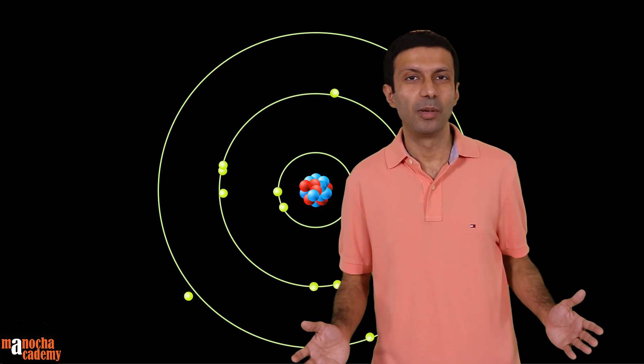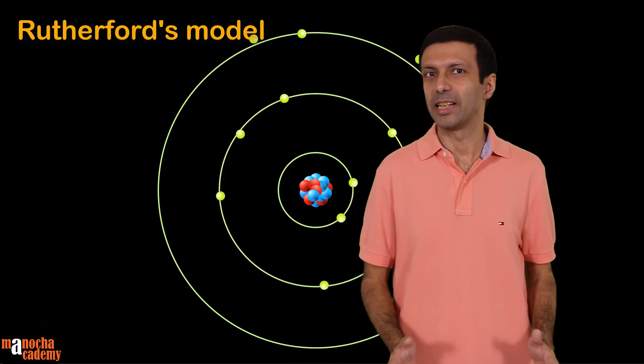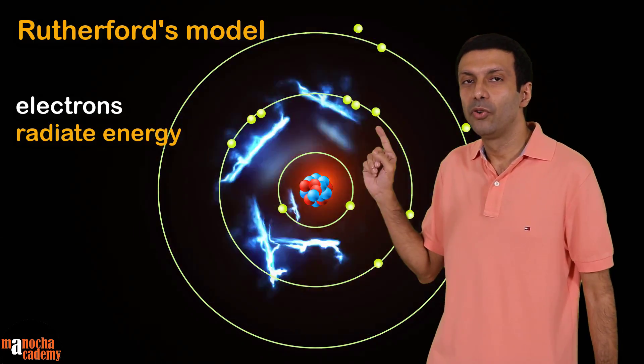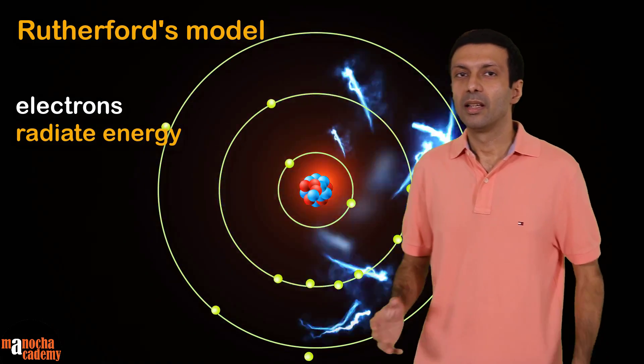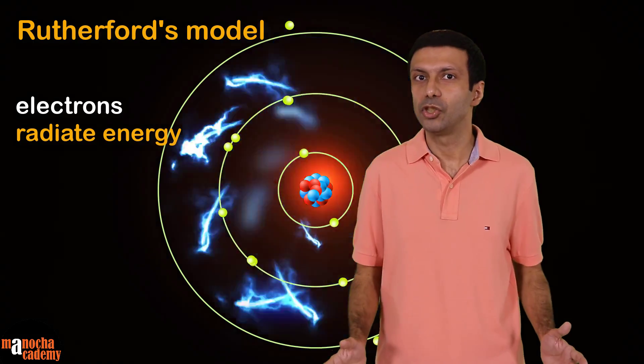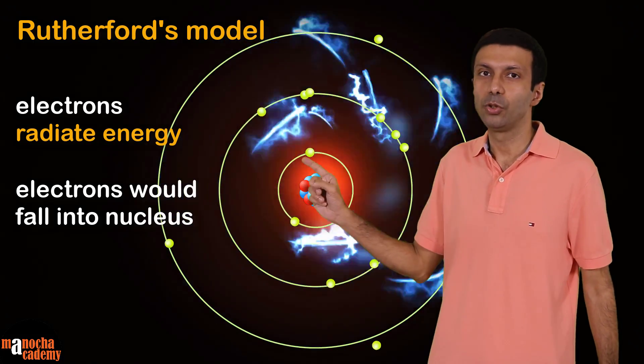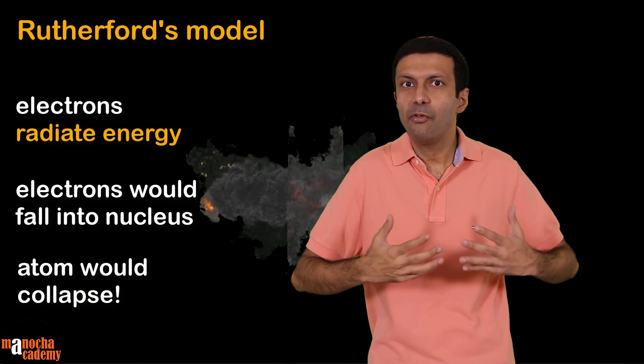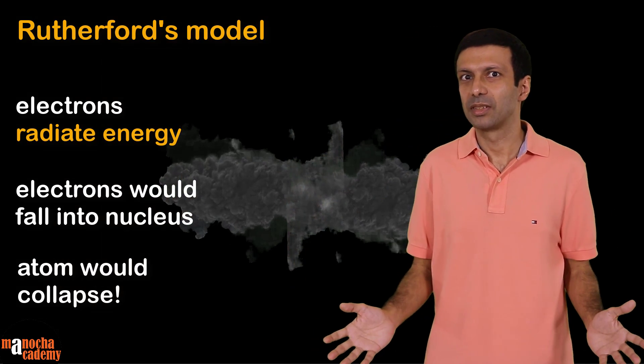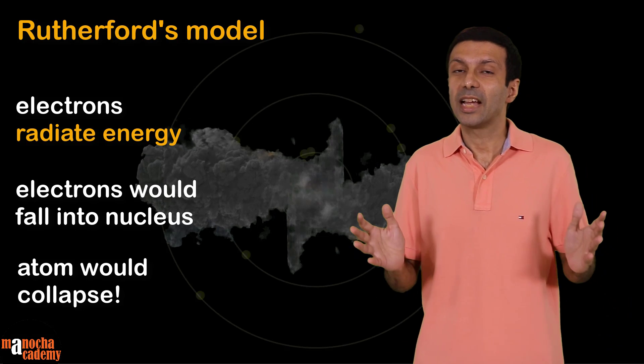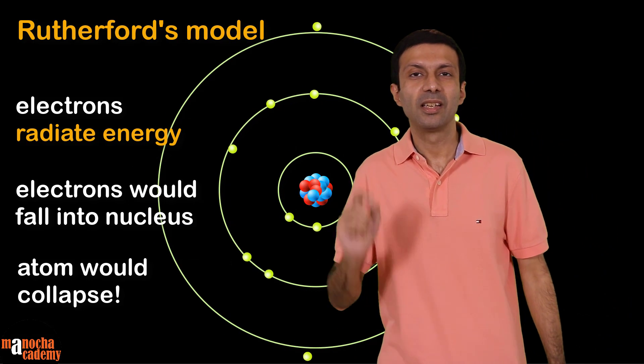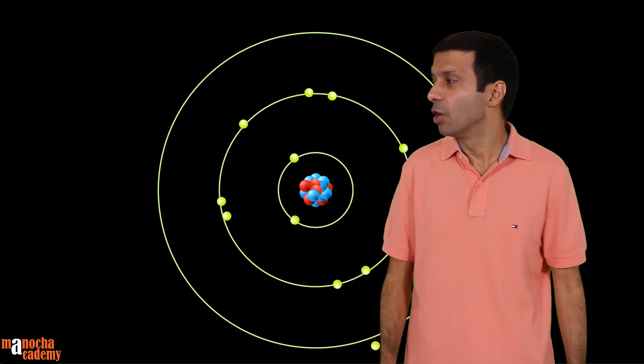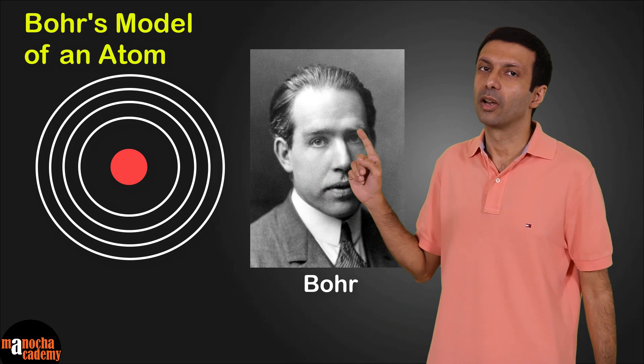But there was a problem with Rutherford's model of an atom. The electrons revolving around the nucleus would radiate energy. This means the electrons would lose energy and finally fall into the nucleus. So the atom would collapse. Then everything around us should collapse. But we know that's not true. The atom is stable.